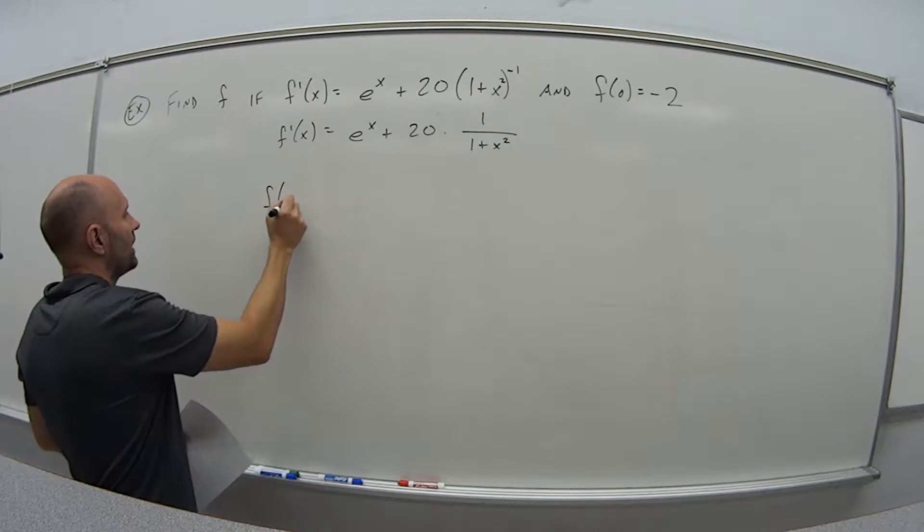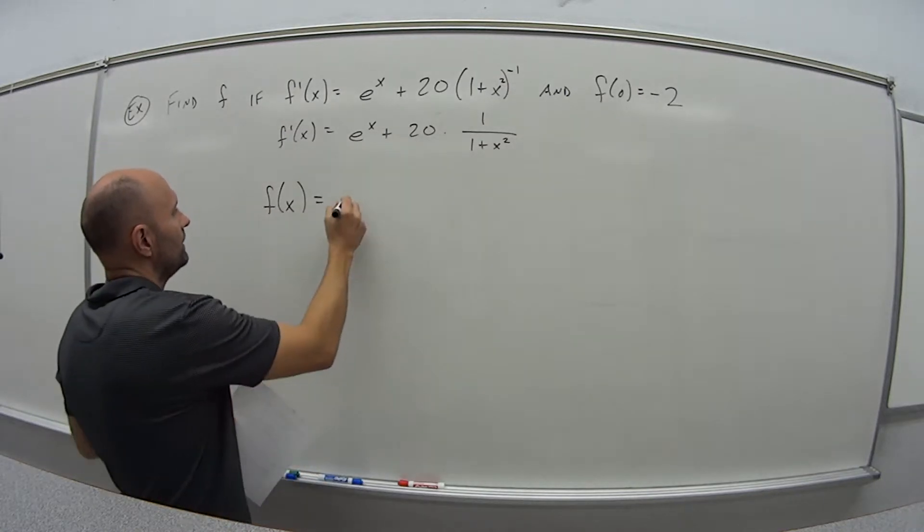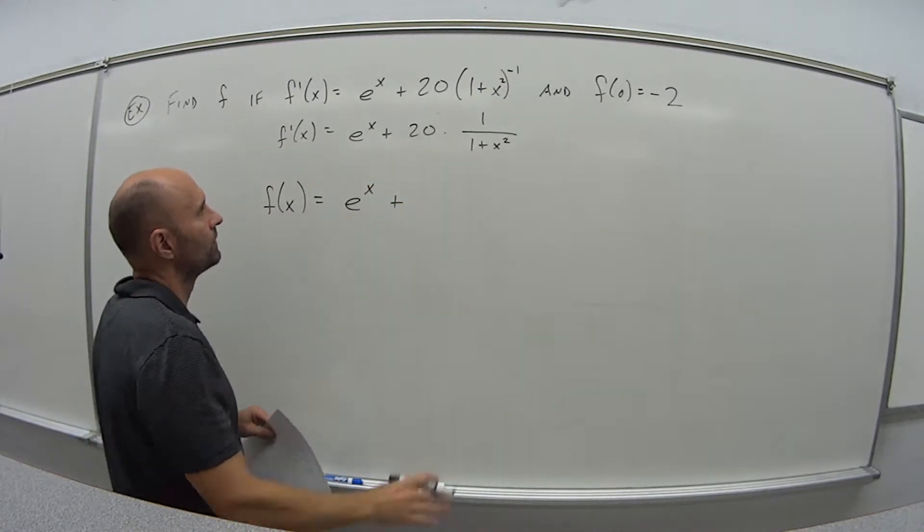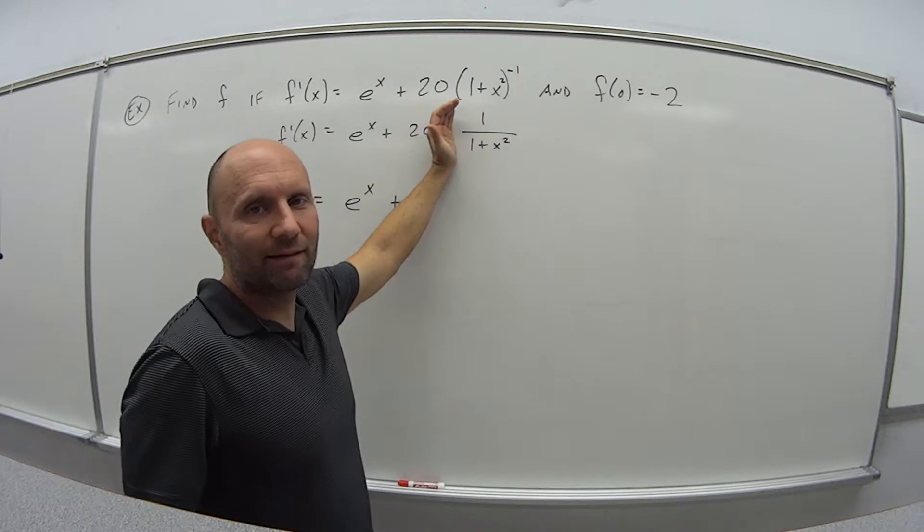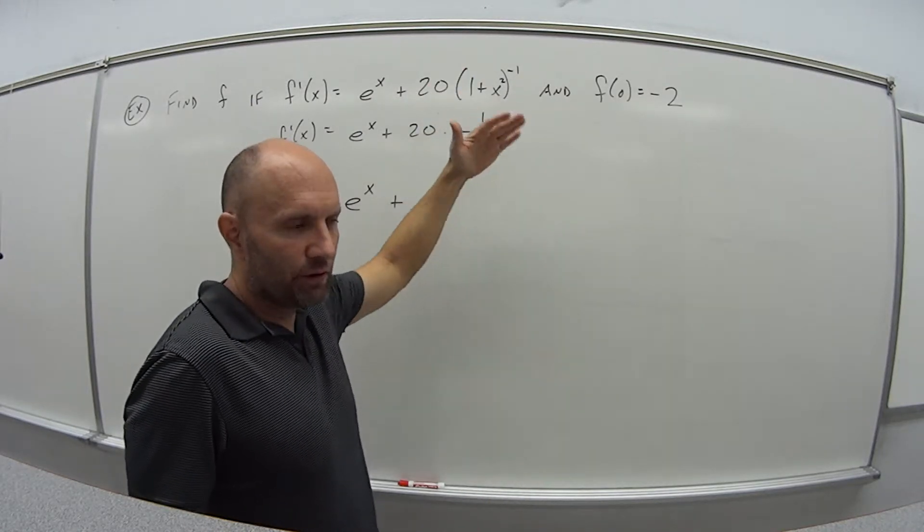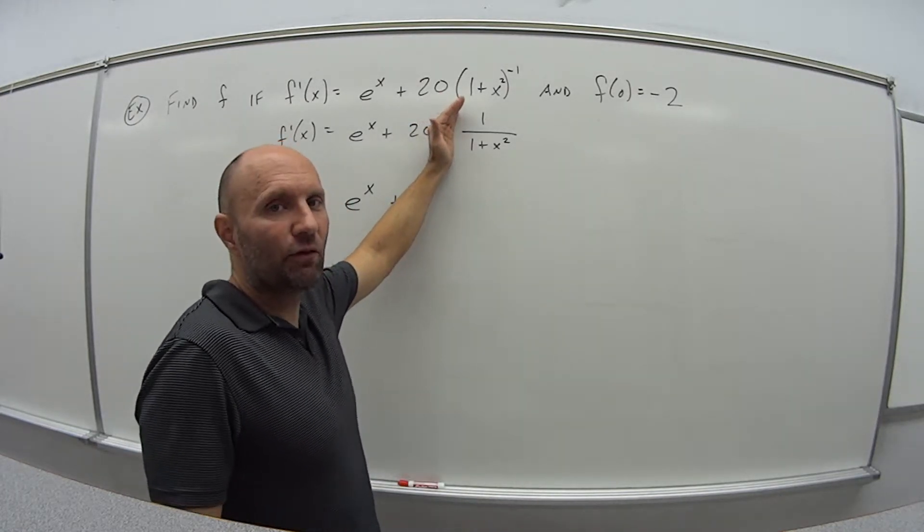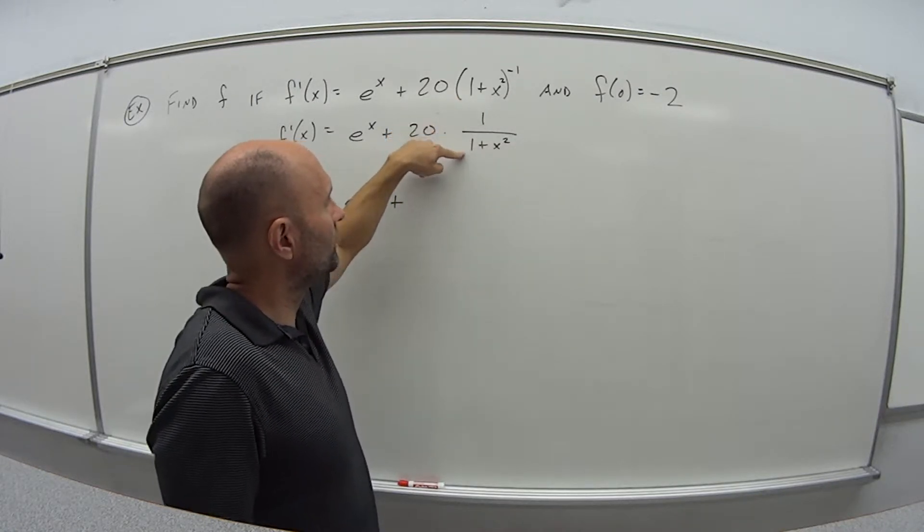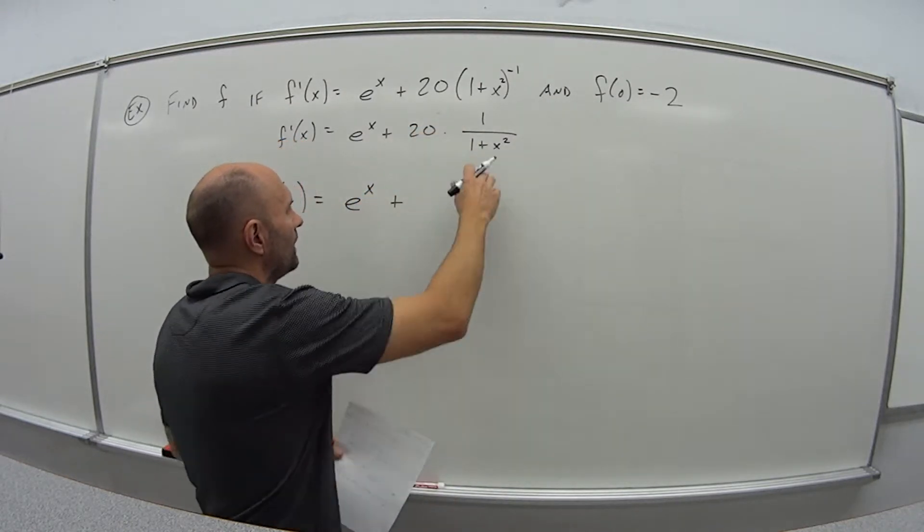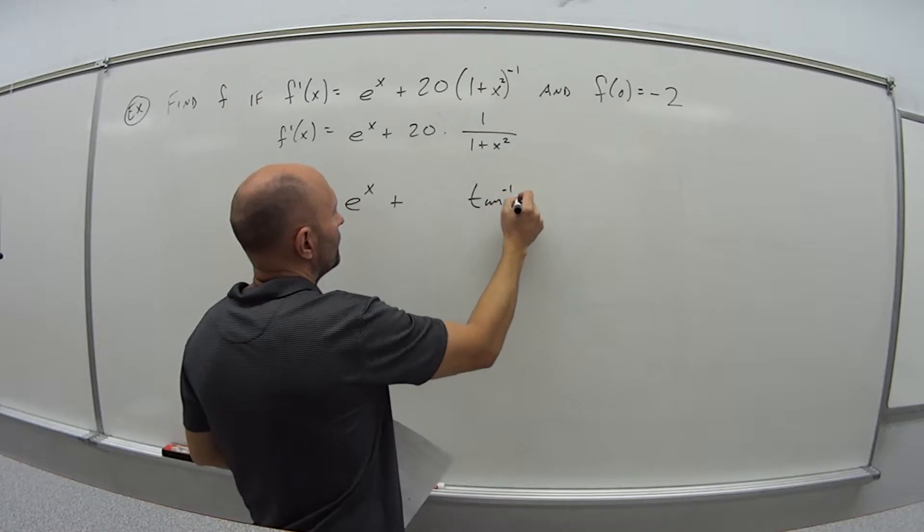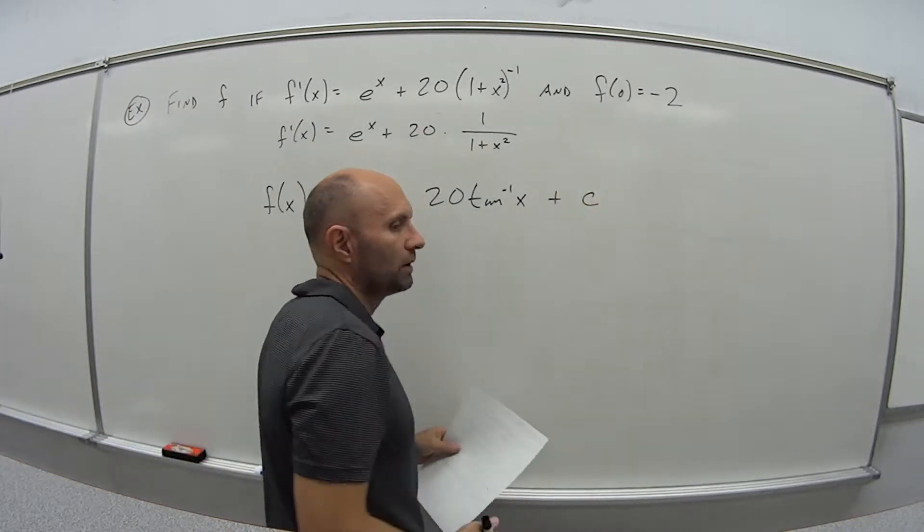Alright. So now let's find the function f. So f of x, well, the anti-derivative of e to the x is just e to the x plus, so I have this 20. So why did I rewrite this? Well, let's look at this guy. Go to your cheat sheet or your quick reference guide or whatever. What function, when I take the derivative of it, gives me 1 over 1 plus x squared? And that's tangent inverse of x. And then again, we have to put this plus c.